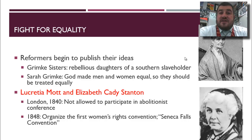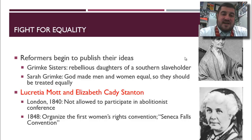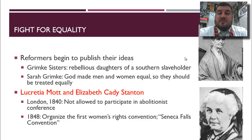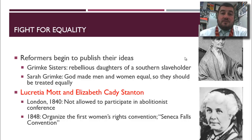Reformers begin to publish their ideas. The Grimké sisters, daughters of a southern slaveholder, are against slavery and also believe that since God made men and women equal, they should be treated equally. Two other women who take it a step further are Lucretia Mott and Elizabeth Cady Stanton. In London in 1840, they go to participate in an abolitionist conference but are not allowed to participate — because they're women. So they go back home and organize the first women's rights convention.